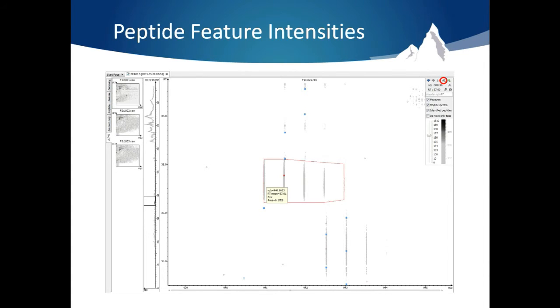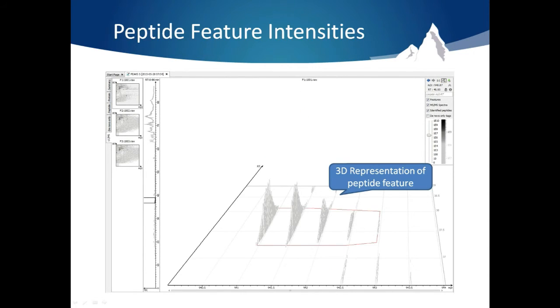You can even get a more intuitive 3D view of the peptide feature by clicking on the 3D button in the top right hand corner of the pane. From this view the peptide feature can be seen very clearly.